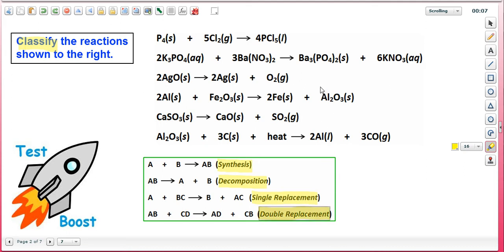So let's apply these starting with the first reaction. We see that two reactants are combining together to form one product, phosphorus pentachloride. This is a synthesis reaction.